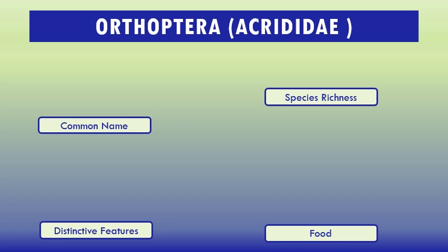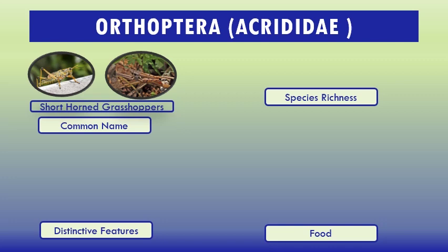Common name: short-horned grasshoppers or common meadow grasshoppers. The shape of the body may be long and slender or short and stout. Many species are green or strongly colored, which helps them blend into their surroundings. Some species have wings and others are wingless.